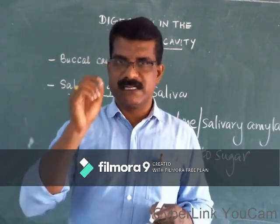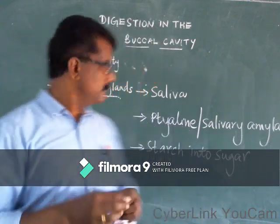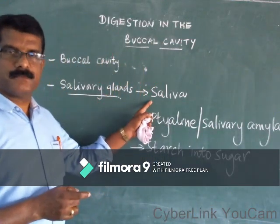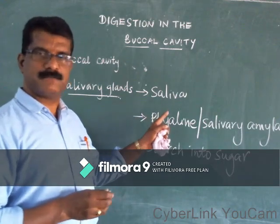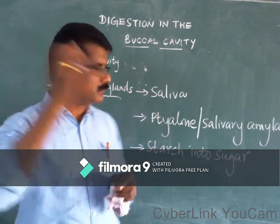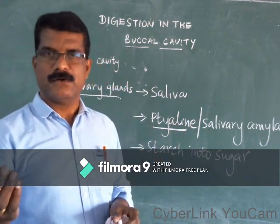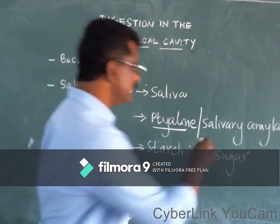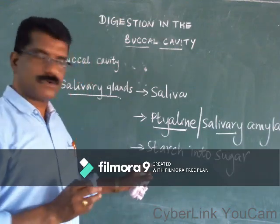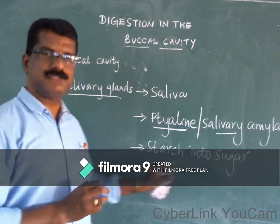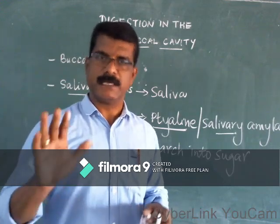Inside the mouth there are salivary glands. The salivary glands produce saliva. The saliva consists of an enzyme called ptyalin, otherwise known as salivary amylase, which helps for the conversion of starch into sugar.